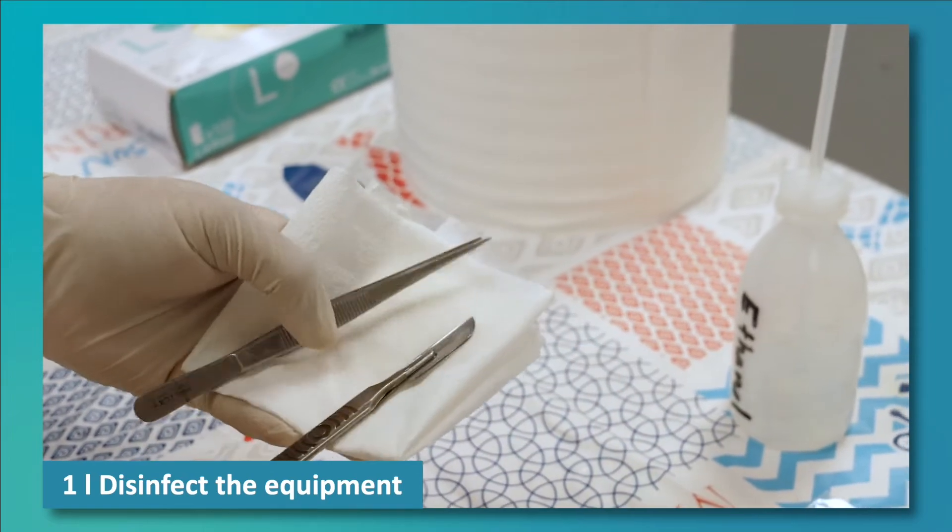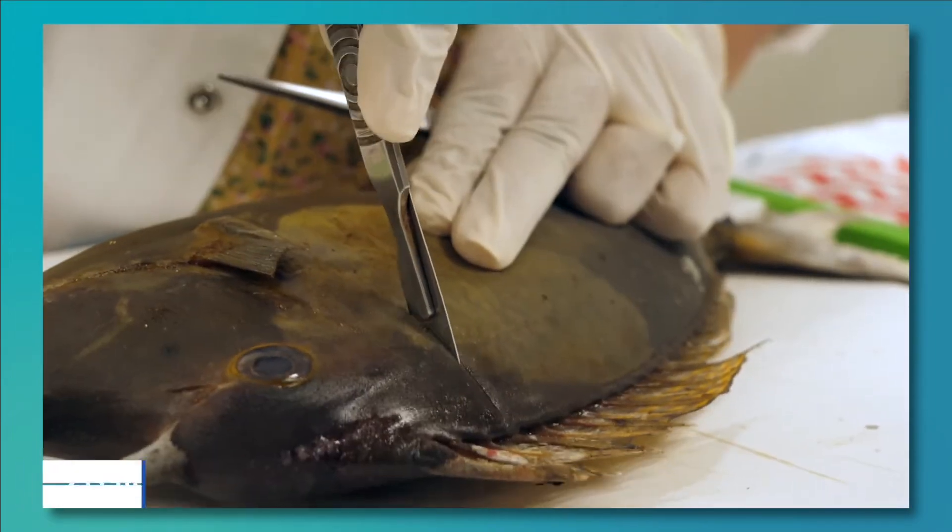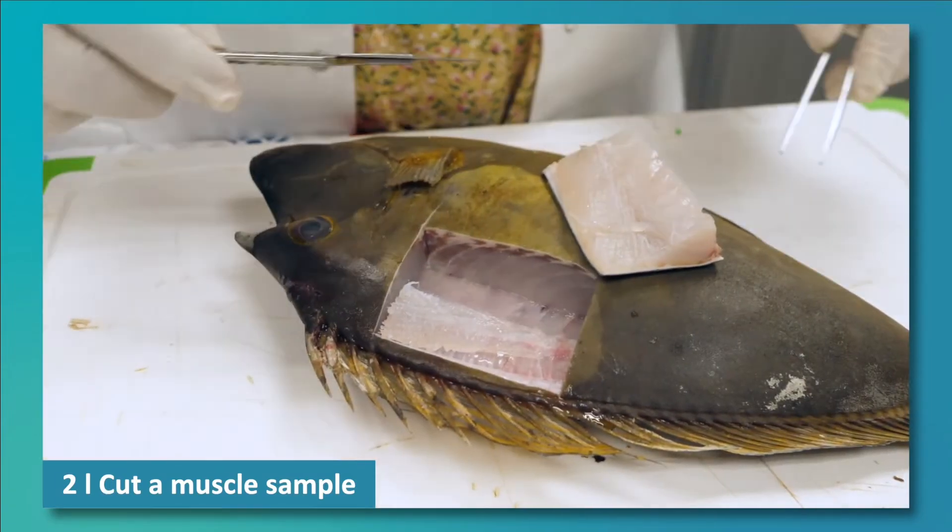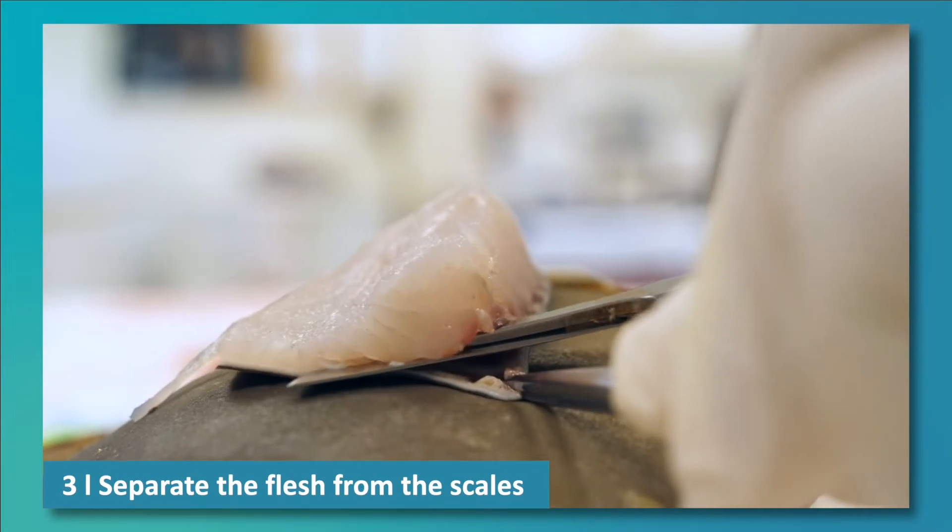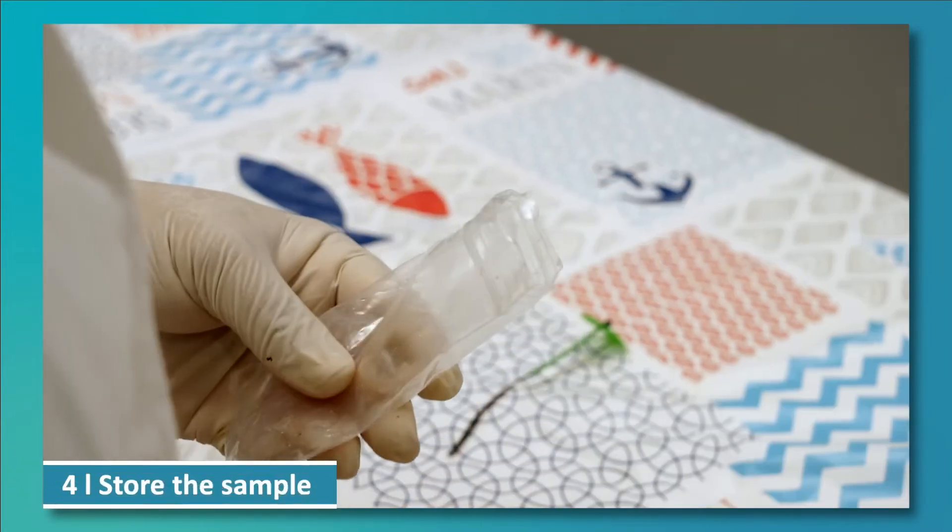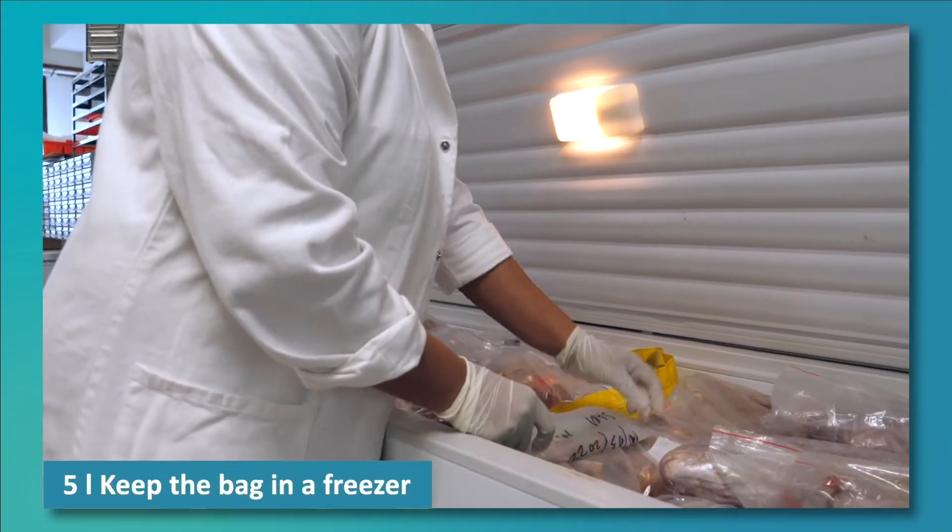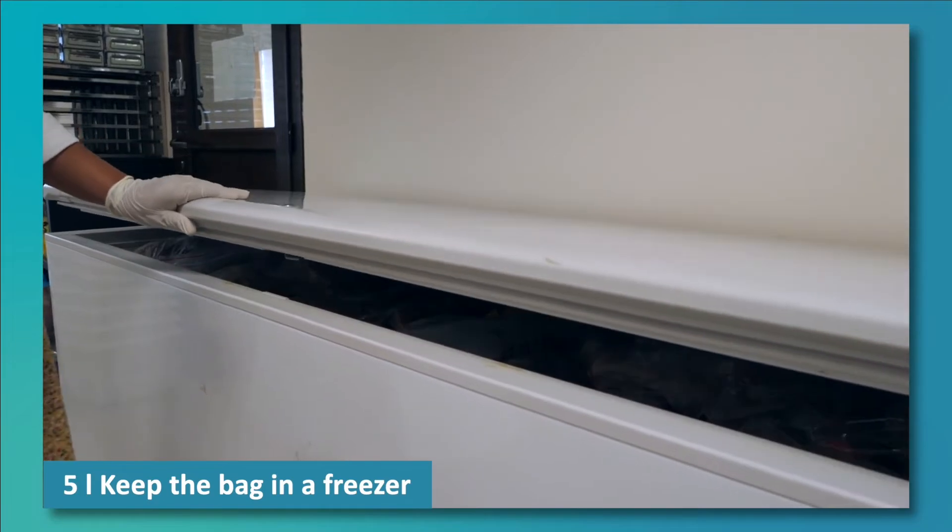Disinfect the equipment. Cut a muscle sample using tweezers and a scalpel. Separate the skin and the scales from the muscle. Store the sample in a labeled plastic bag. Keep the bag in a freezer or cold storage before sending the sample for analysis.